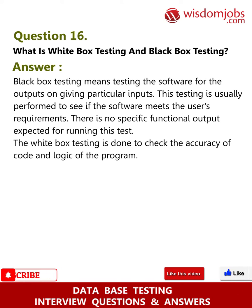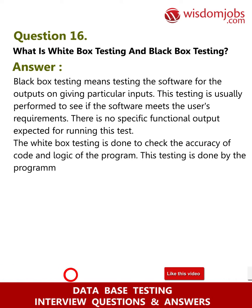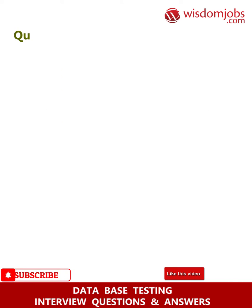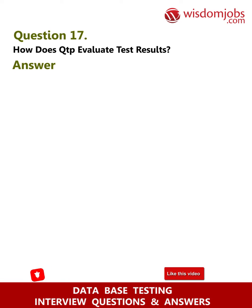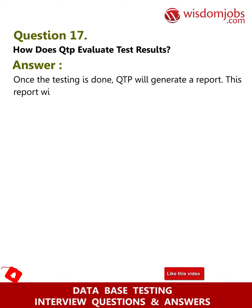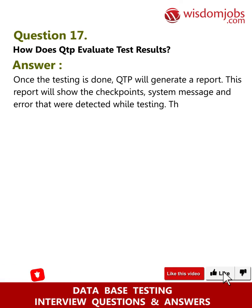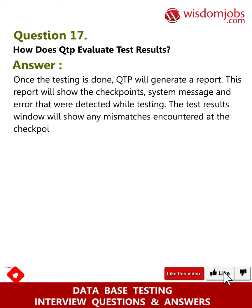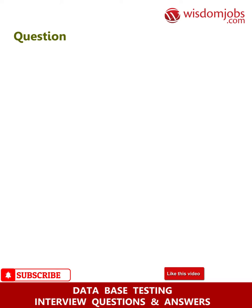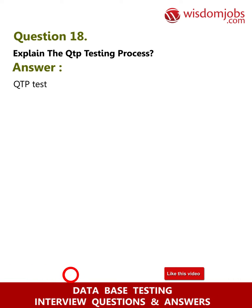White box testing is done to check the accuracy of code and logic of the program. This testing is done by the programmer who knows the logical flow of the system. Question 17: How does QTP evaluate test results? Once testing is done, QTP will generate a report showing checkpoints, system messages, and errors detected during testing. The test results window will show any mismatches encountered at the checkpoints.